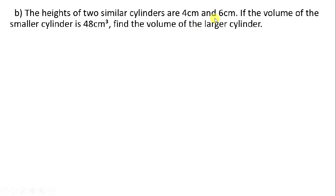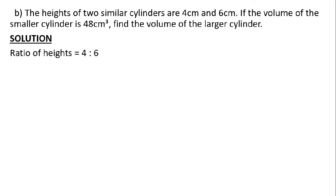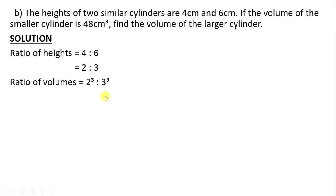Question 20b: The heights of two similar cylinders are 4 cm and 6 cm. The volume of the smaller cylinder is 48 cm³. Find the volume of the larger cylinder. For similar figures, volumes are in the ratio a³ to b³. First find the ratio of heights: 4 to 6, which simplifies to 2 to 3. The ratio of volumes is 2³ to 3³ = 8 to 27.